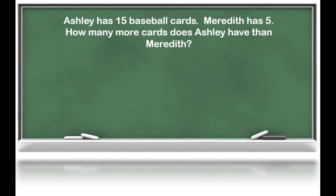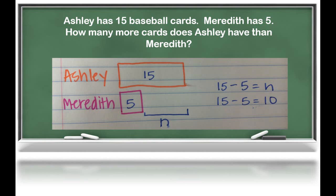Let's look at one more problem similar to these last two. Ashley has 15 baseball cards. Meredith has five. How many more cards does Ashley have than Meredith? We know the number of cards Ashley has, so we drew that in. And we know Meredith has five cards, which is less than 15. What we don't know is the difference between Ashley and Meredith — that's what's drawn in by the variable. We can write the equation 15 minus 5 equals N, and solve: 15 minus 5 equals 10, so N must equal 10.